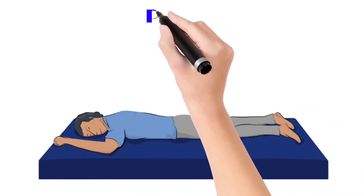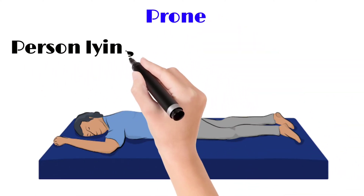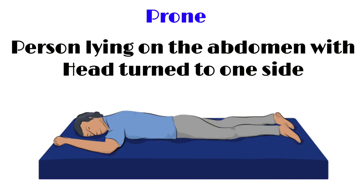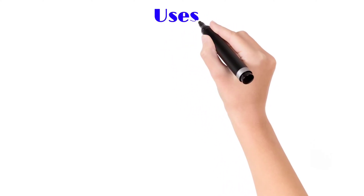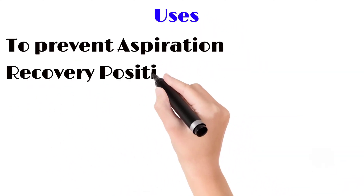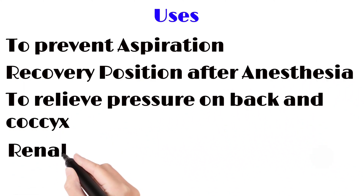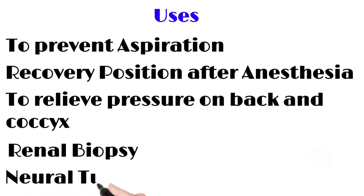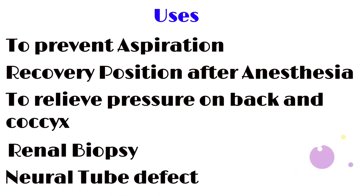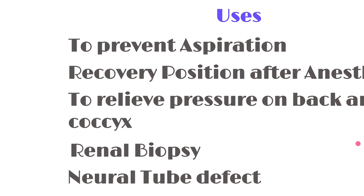Next, as you can see in the image, the opposite of supine is prone — the person lying on the abdomen with head turned to one side. The uses are to prevent aspiration, recovery position after anesthesia, to relieve pressure on back and coccyx, renal biopsy, and neural tube defects like spina bifida and spina bifida occulta.